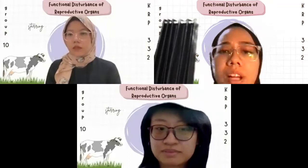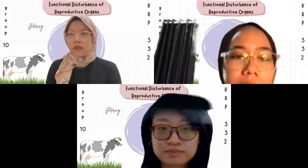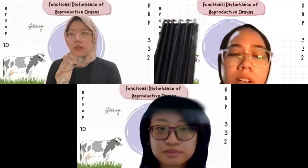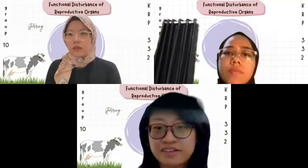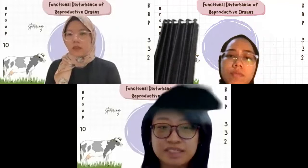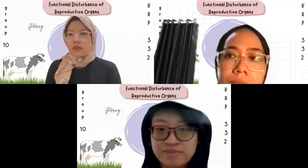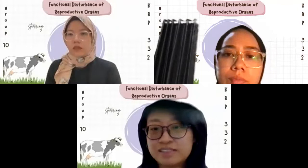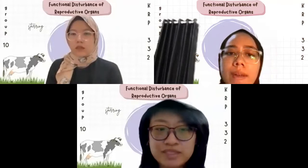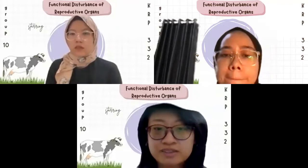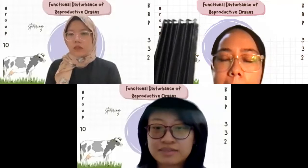What causes nymphomania in cows? Nymphomania is caused by a lack of or impaired release of GnRH from the hypothalamus, leading to a lack of or impaired release of LH from the anterior pituitary gland. This prevents follicles from ovulating, which later form cysts. Follicles that fail to ovulate also lead to the absence of a functioning corpus luteum.